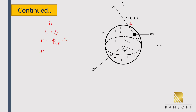So dE is equal to ρV dV divided by 4π ε₀ R² times unit vector aR, because dQ is equal to ρV dV. This is the differential electric field due to the charge dQ. Due to the symmetry of charge distribution, the contributions due to EX and EY add up to zero, so only the EZ component is left.